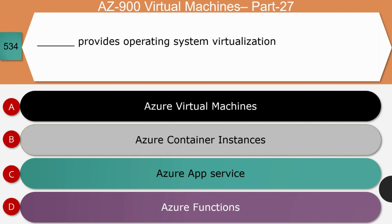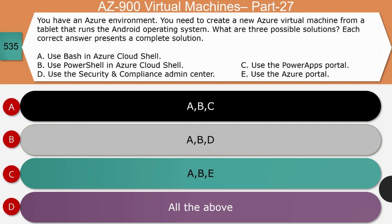Question 14: What provides operating system virtualization — Virtual Machine, Azure Container Instances, Azure App Service, or Azure Functions? The right answer is Azure Virtual Machine. Azure VMs provide operating system virtualization and are one of several types of on-demand scalable computing resources that Azure offers. You typically choose a VM when you need more control over the computing environment.